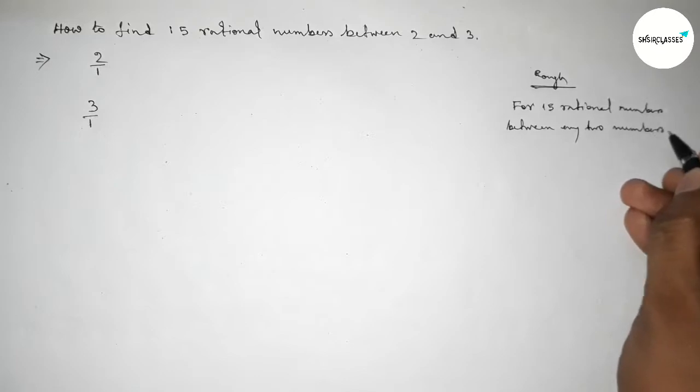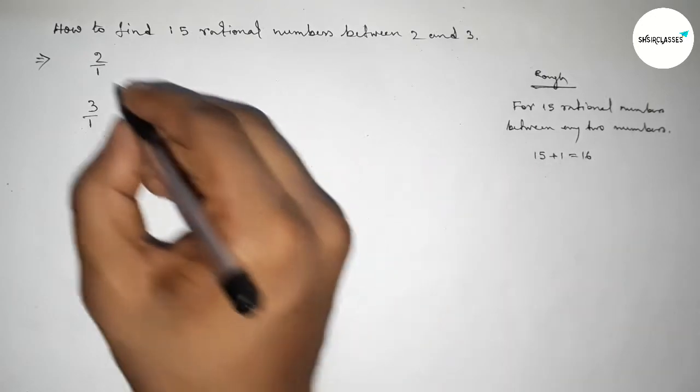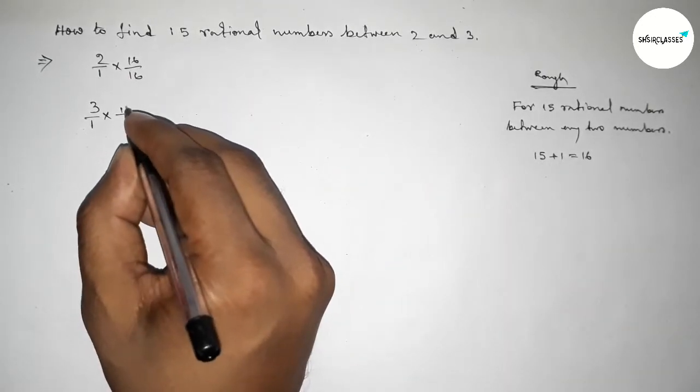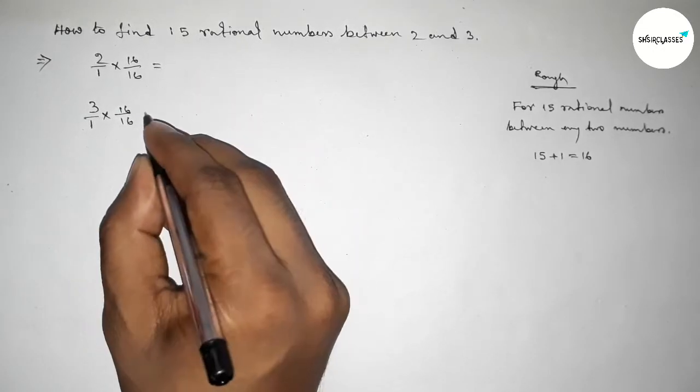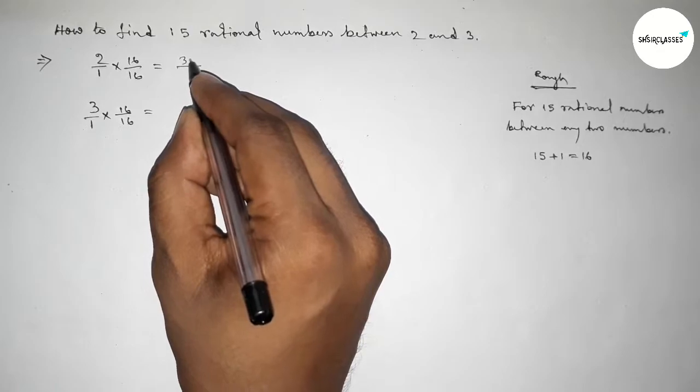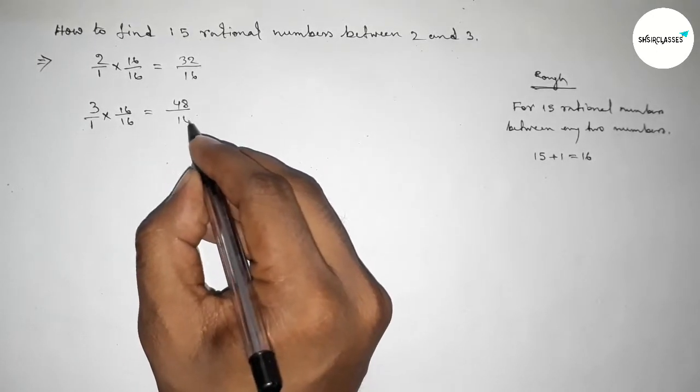We should multiply both numbers by 15 plus 1, equal to 16. So multiplying by 16 both numbers, so here equal to this is 32 over 16 and here 48 over 16.